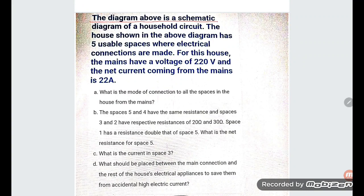Observe the diagram above — this is the systematic diagram of the household circuit. The house shown has 5 usable spaces where electrical connections are made. For this house, the mains have a voltage of 220 volts and the net current coming from the mains is 20 amperes.